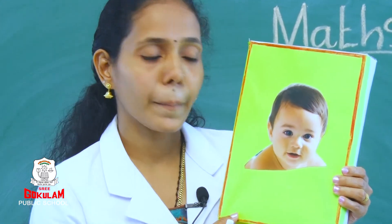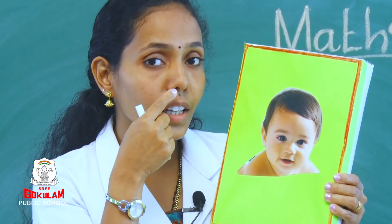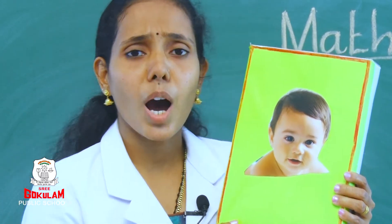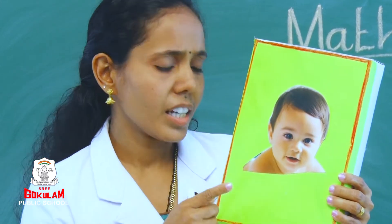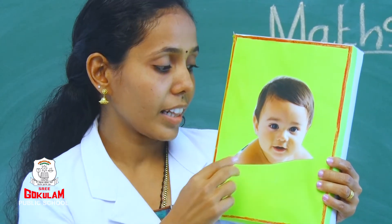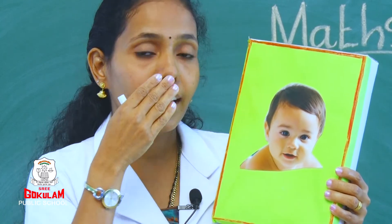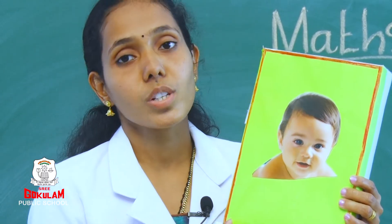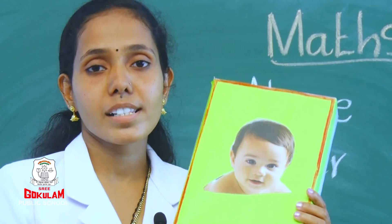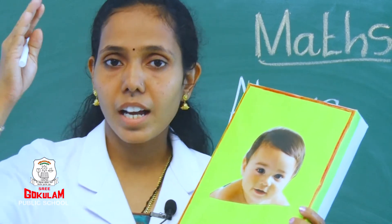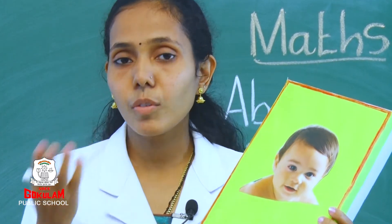Where is his nose? Yes, the nose is under the eyes. Where is his mouth? Is it above or under? Yes, the mouth is on the lower side. So we can say the mouth is under the nose. Is it clear students? Something which is kept on the upper side, we can say that is above, and something which is kept on the lower side, we can say under.